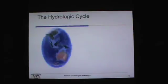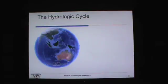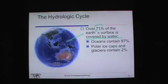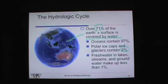The hydrologic cycle — over 71% of the Earth's surface is covered by water. The oceans contain 97% of all of the water on the Earth. Polar ice caps and glaciers make up 2% — seems like a small amount. But most of the water that we use — fresh water in lakes, streams, and groundwater — makes up less than 1%. Wow. That's where we get our water from. Very small amount.